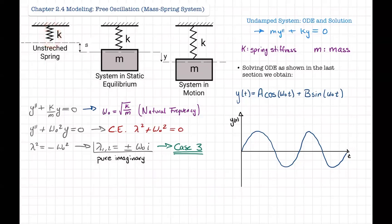The way we start is that every spring has a spring stiffness k, where the units can vary but usually they're force over length — for example, newtons per meter. When you add a mass in kilograms (SI units), that spring will deflect a little bit, and this deflection is s. Here the system is not moving — the spring has stretched a little bit but it's not oscillating, it's just hanging. The system is in static equilibrium.